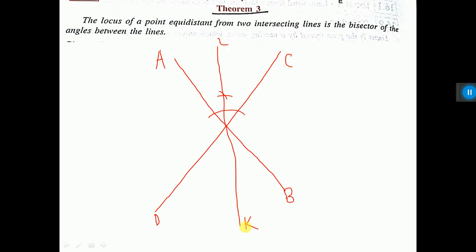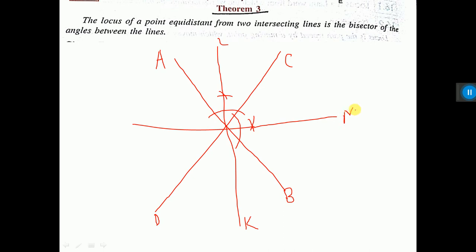This LK or KL is the locus satisfying this condition. Similarly, if you bisect this angle and join, this is another locus with the same condition — let's say MN. This MN is another locus.